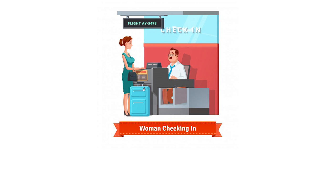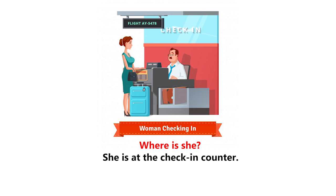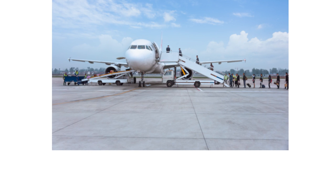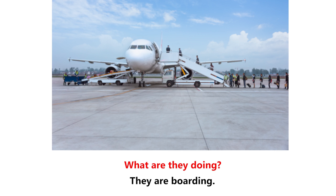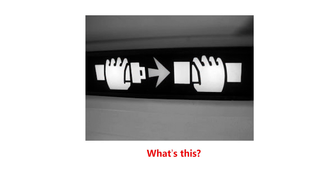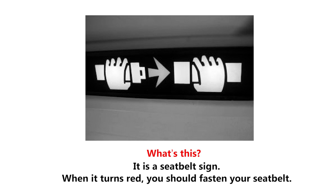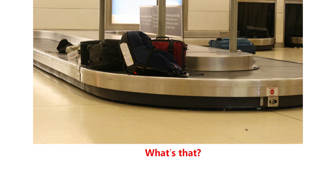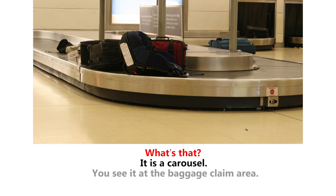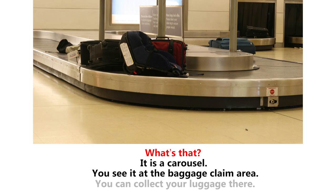Let's practice more — look at the pictures and answer the questions. Picture one: Where is she? She's at the check-in counter. What is she doing? She's checking in. Picture two: What are they doing? They're boarding. Picture three: What's this? It's a seat belt sign — when it turns red you should fasten your seat belt.